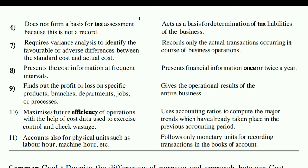The eleventh point: cost accounting also accounts for physical units such as labor hours, machine hours, productivity, etc. These are things you can know from cost accounting. But financial accounting does not do this — financial accounting follows only monetary units for recording transactions in the books of accounts. For example, in financial accounting you record a purchase of Rs. 70,000 on cash as 'Purchase account debit to cash' — the monetary amount. But how many hours were worked, how many machines were used — you cannot find this from financial accounting. For that, you have to do cost accounting.